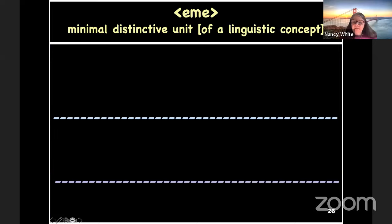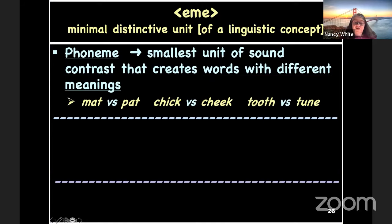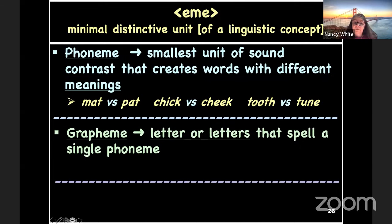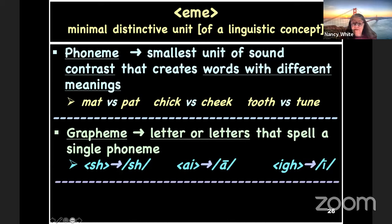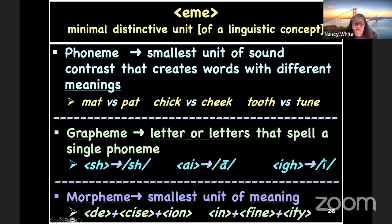The base element EME means, from Greek, 'minimal distinctive unit of a linguistic concept.' A phoneme is the smallest unit of sound contrast that creates words with different meanings — in each pair of words, only one phoneme is different but the meanings are very different. A grapheme is the letter or letters that spell a single phoneme — it could be one letter, two letters, or three letters. A morpheme is the smallest unit of meaning. In the word 'decision,' we have the prefix DE-, the base CISE, and the suffix -ION. In 'infinity,' we have IN-, FINE, and -ITY — each is a meaningful unit.